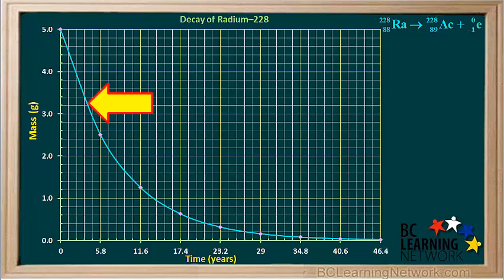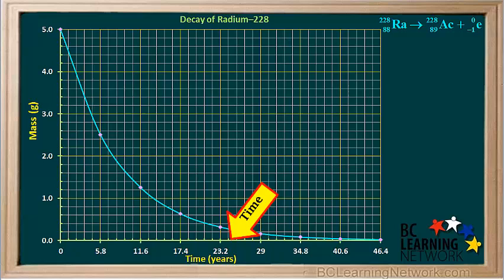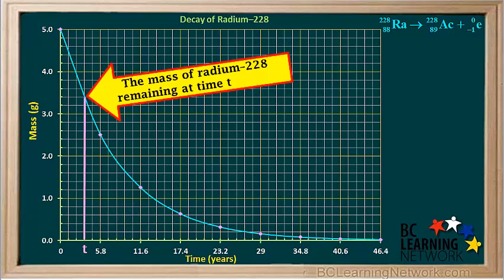Here's a graph showing how the mass of radium-228 decreases over time. On the y-axis we have mass in grams, and on the x-axis we have time in years. Each point on the graph gives the mass of radium-228 remaining at the corresponding time. You can see that at time t, the mass of radium-228 remaining is 3.4 grams. The rest has been changed into actinium-228.